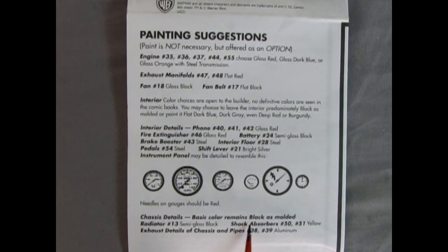Chassis details: Basic color remains black as molded. Radiator, semi-gloss black. Shock absorber is yellow. Exhaust details of chassis and pipes are aluminum.